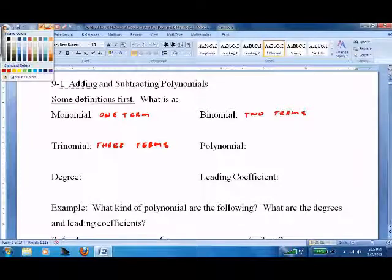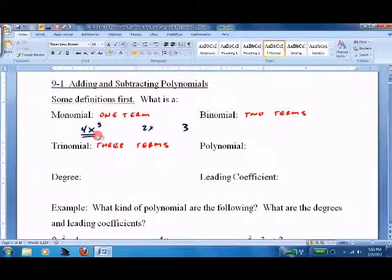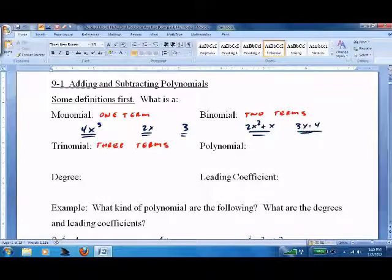Well, terms are just simple exponents. For example, this would be 4x to the third, or 2x, or 3. Any of these would be considered a monomial. Binomial would be 2x squared plus x, or 3x minus 4, or 7x to the fifth plus 2.